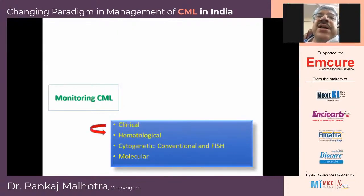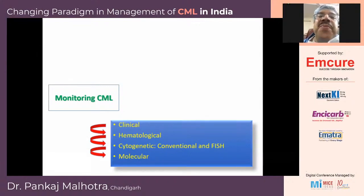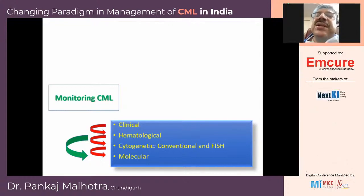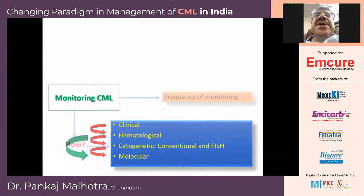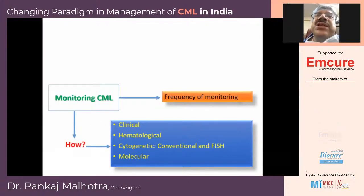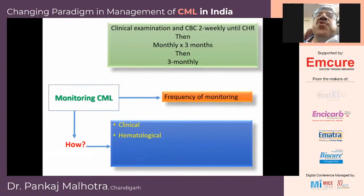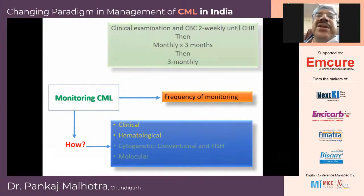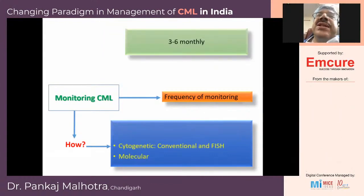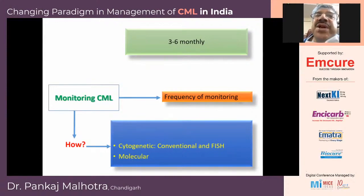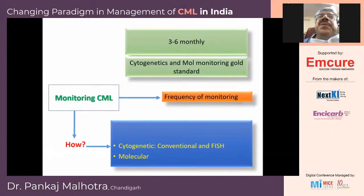Once you have clinical remission, you look at hematological remission, then cytogenetic remission, then molecular remission. However, once a patient achieves hematological remission, you can go directly to molecular remission, as many labs these days are not doing cytogenetics. For frequency of monitoring: clinical examination and CBC are done two-weekly until complete hematological response, then monthly for three months, then three-monthly. Cytogenetics and molecular monitoring are generally done three to six monthly, and cytogenetics is skipped unless there are clear indications — molecular monitoring is the gold standard.